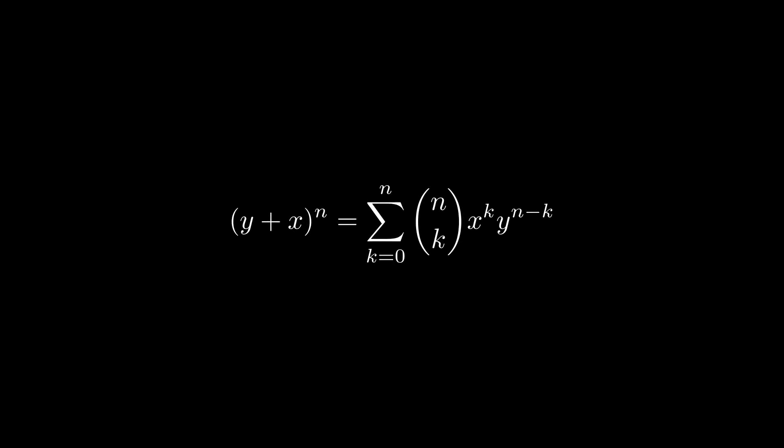Now for our second claim, that the sequence is monotonically increasing. For this part of the proof, we're going to apply the binomial theorem. When y equals 1, the formula simplifies to this. A full explanation of this formula is outside the scope of this video, so we'll leave a link in the description with more information.